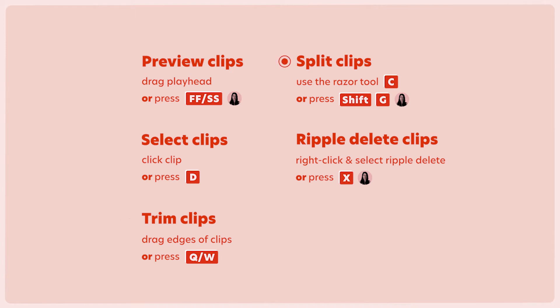I also want you to know how to split clips in two, which you can do using the razor tool — you can get to that tool by pressing the C key — or you can use my absolute favorite custom keyboard shortcut, Shift+G, which will quickly and automatically cut any clips at the playhead, and you don't need any special tools to do that.